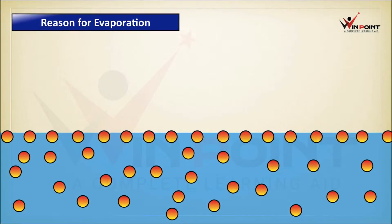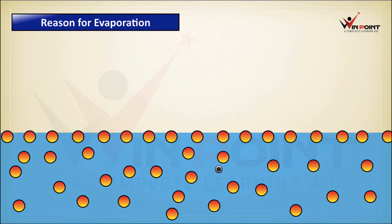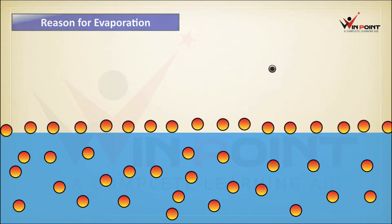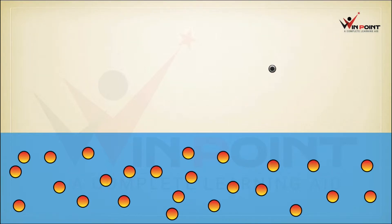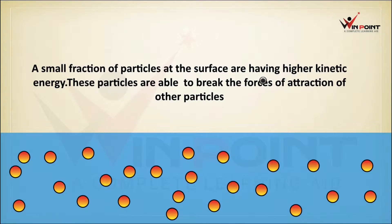We can discuss the reason for evaporation. We know that liquid consists of several particles — there are n number of particles because liquid is a matter, and matter consists of particles. The particles at the surface are known as surface particles. When these surface particles get kinetic energy — and there is a chance of getting high kinetic energy because sunlight is directly striking on the surface — these surface particles are going to get higher kinetic energy and convert into vapor. Evaporation is because of kinetic energy of the particles, and it is a surface phenomenon. A small fraction of particles at the surface having higher kinetic energy are able to break the forces of attraction of other particles and escape into vapor state.